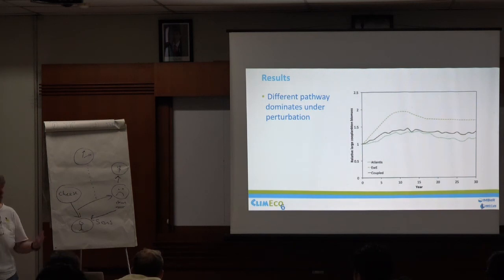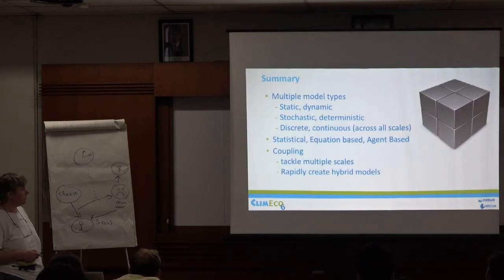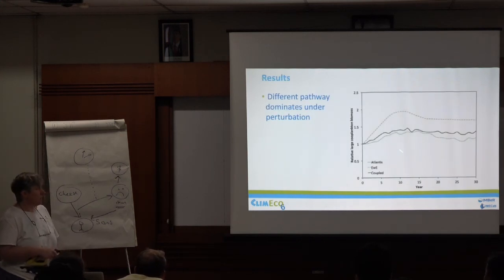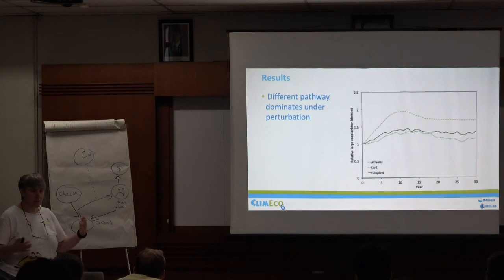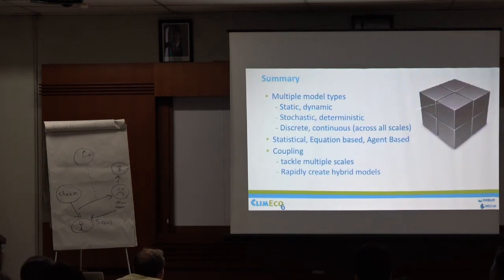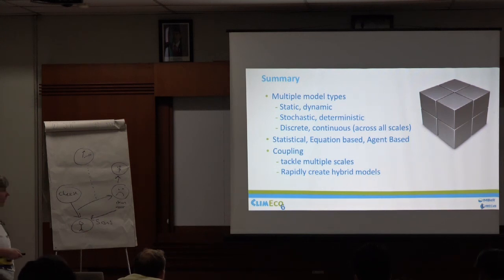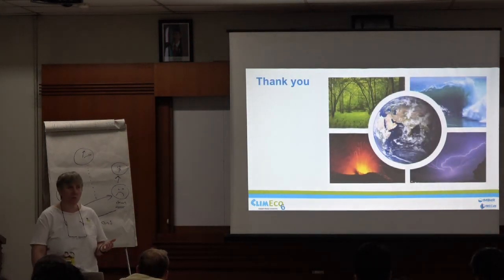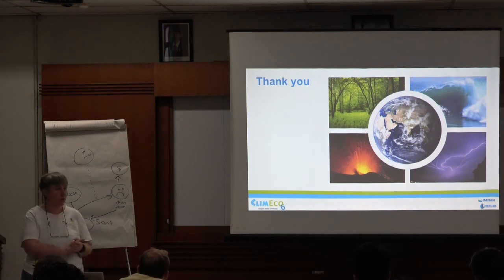There are now lots of different groups around the world doing similar kinds of coupling. The coupled approach is much more useful when you want to explore uncertainty, because it can run so much faster. So in summary: there are different model types — statistical, equation-based, agent-based — and then different ways of linking them together. That's a rapid overview of the kinds of models you can use.